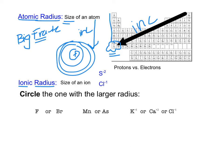Let's practice — we're going to circle the one with the larger radius. Comparing fluorine versus bromine, those are two halogens. We would say bromine is the larger atom. It's farther down the periodic table — it literally just has more energy levels, so the size of the radius is larger.